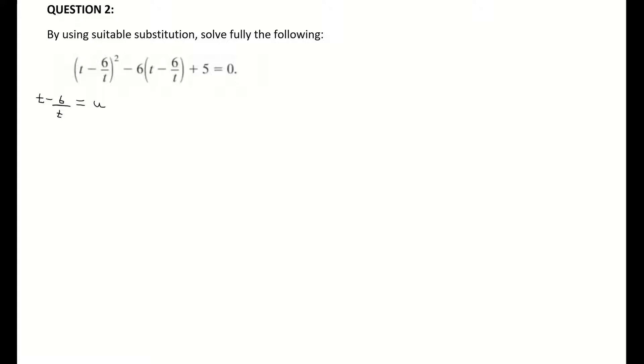When I sub that into my quadratic, I'm now changing what's inside the brackets and I'm changing it for the letter u. So I'm just substituting in u instead of t minus 6 over t.